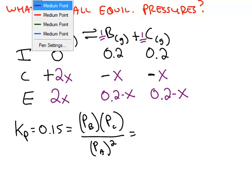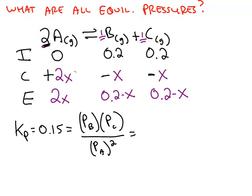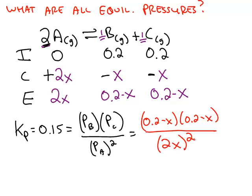And now we just substitute in according to the ICE chart. The ICE chart tells us the pressure of B at equilibrium is 0.2 minus X. The pressure of C at equilibrium is also 0.2 minus X. And the pressure of A at equilibrium is 2X. And we still have to square that.